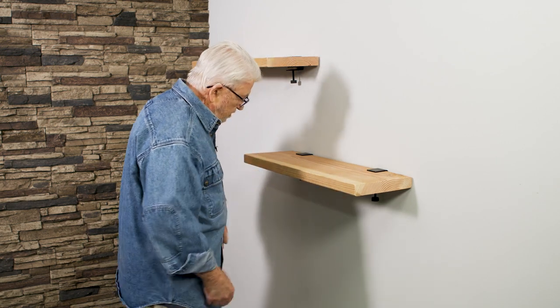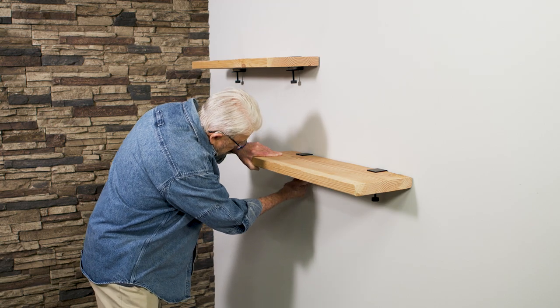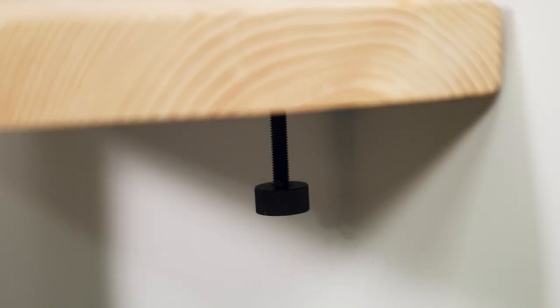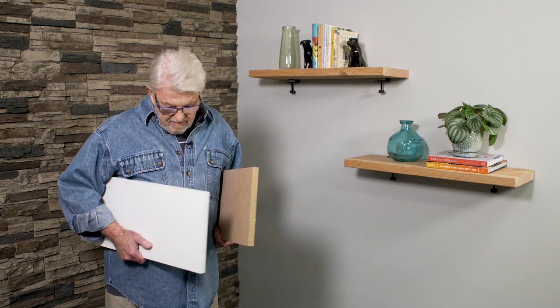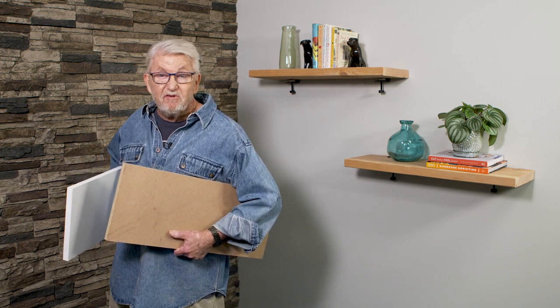I've decided to add a second shelf, lower and offset to the right. This wall shelf mounting system is flexible. It can be used with a variety of materials. Pre-finished melamine or even MDF that you can paint whatever color you want.